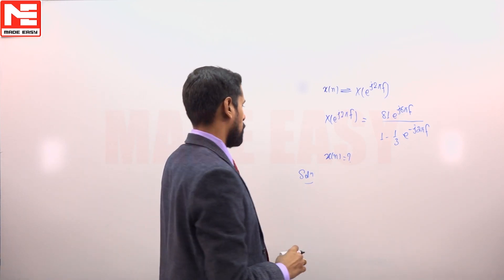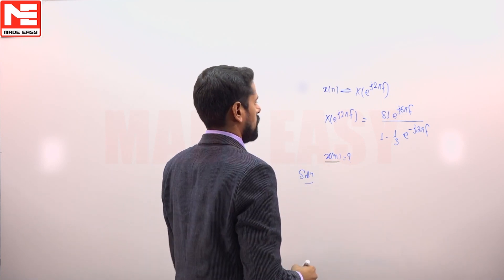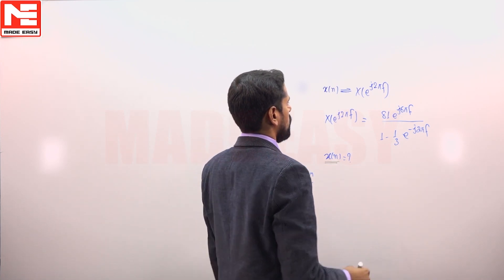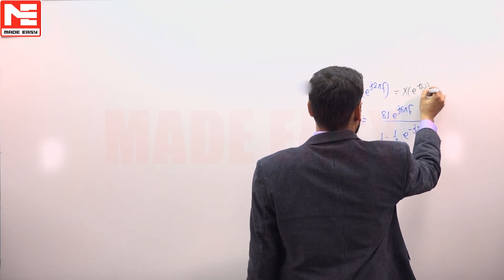In the next question we have to obtain inverse Fourier transform x of n. Now we can write down this notation in this way also: x e^(jω).